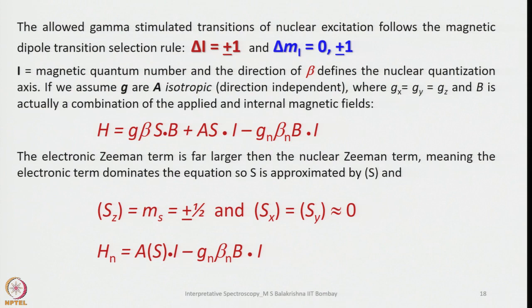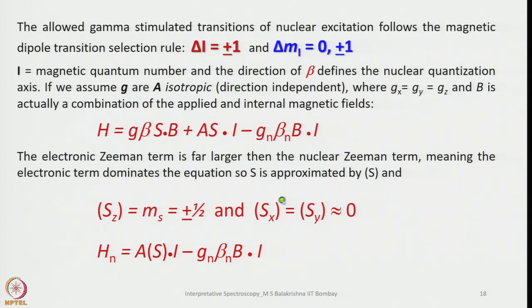The allowed gamma-stimulated transitions of nuclear excitation follow the magnetic dipolar selection rules: ΔL = ±1 and Δm_I = 0 or ±1. Here I is the magnetic quantum number. The direction of B defines the nuclear quantization axis. Assuming g is isotropic (g_x = g_y = g_z) and B is a combination of applied and internal magnetic fields, the Hamiltonian becomes H = gβS·B_applied − g_n β_n B·I. The electronic Zeeman term is far larger than the nuclear Zeeman term, so the electronic term dominates, giving S_z ≈ ±½ and S_x = S_y = 0.